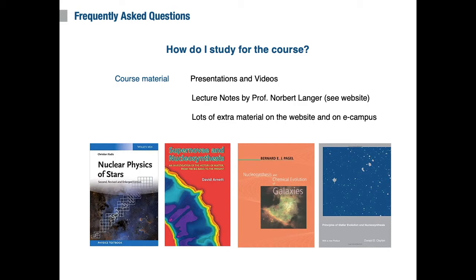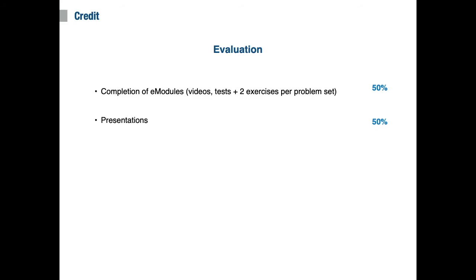In general, we try to make the course as self-contained as possible. In other words, the material provided on eCampus and the lecture notes is all you need to follow along. Now, that said, some previous knowledge of stellar evolution of nuclear physics is assumed, so if you do find yourself having trouble following the lectures, you are encouraged to consult the additional resources provided in each module or one of these four recommended textbooks. Again, you can find more information about these resources on the website.